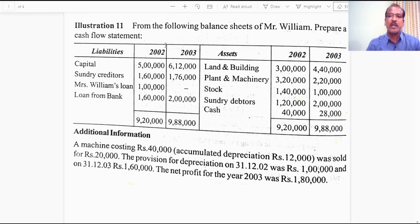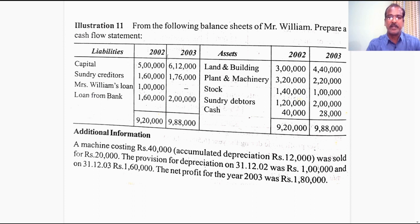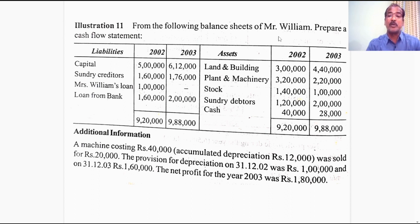Let us look at the problem. From the following balance sheets of Mr. William, prepare a cash flow statement. You are given with the details for two consecutive periods, year 2002 and year 2003. So 2003 is the current year according to this problem. You are given with the items in liabilities like capital — you find an increase in the value of capital — but be careful, this is a problem related to a sole proprietary concern, so you might require to open a separate ledger account for capital.